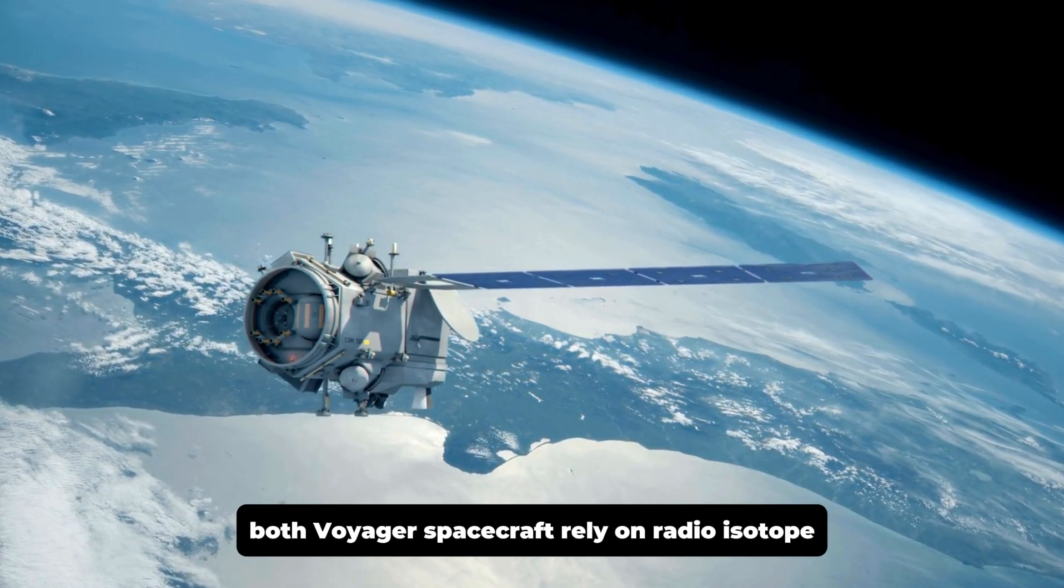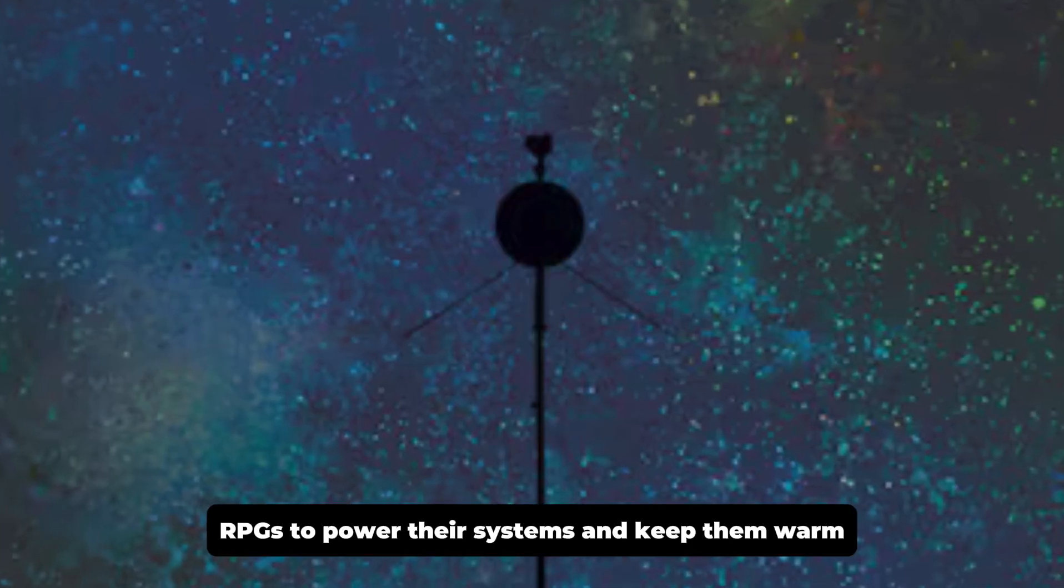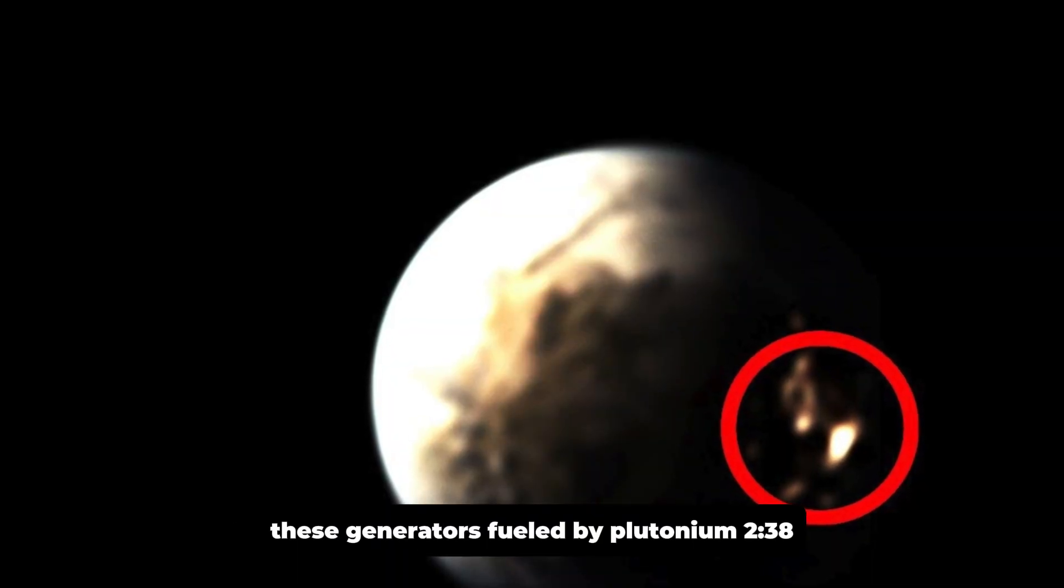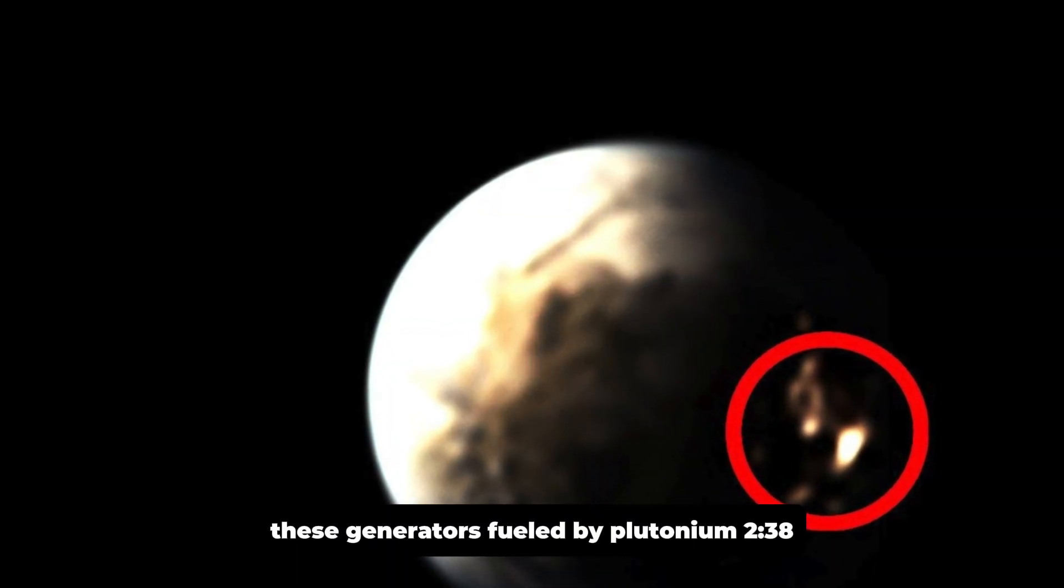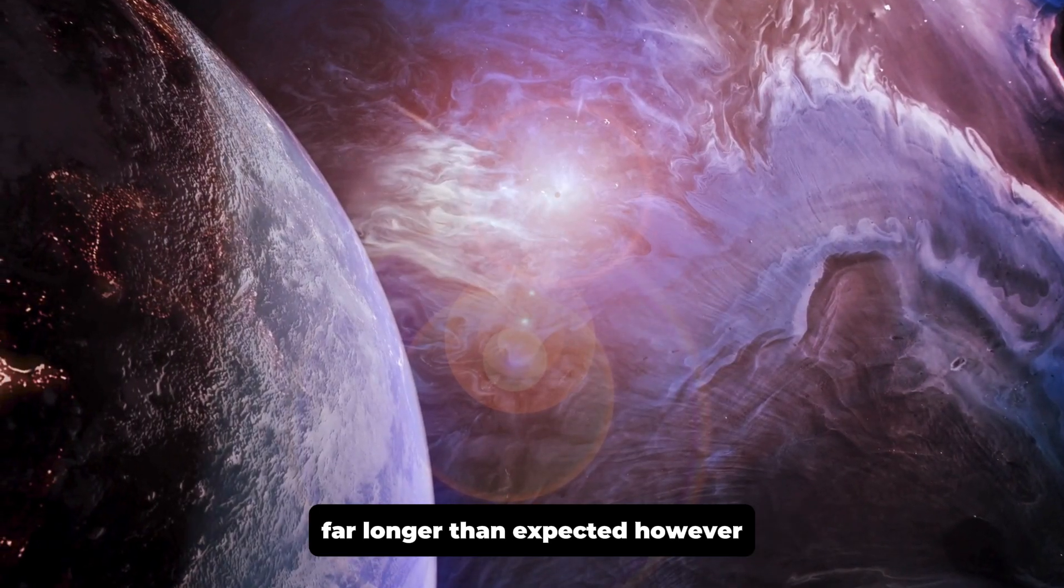In addition to their scientific instruments, both Voyager spacecraft rely on radioisotope thermoelectric generators, RTGs, to power their systems and keep them warm. These generators, fueled by plutonium-238, have allowed the probes to continue their missions far longer than expected.